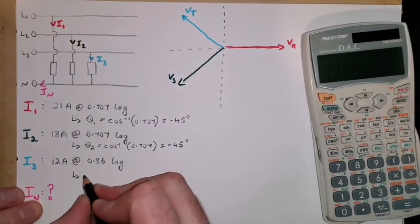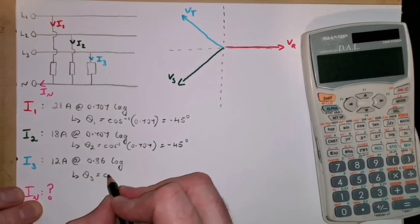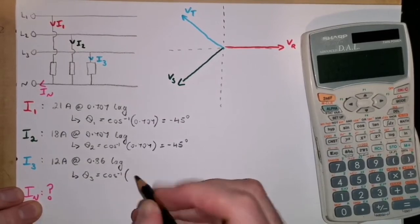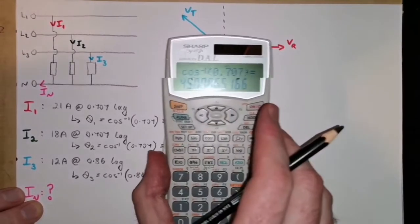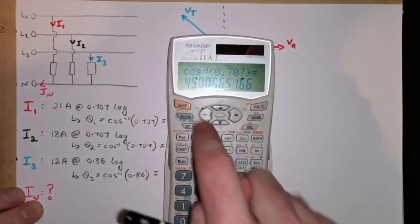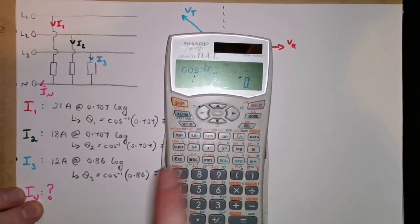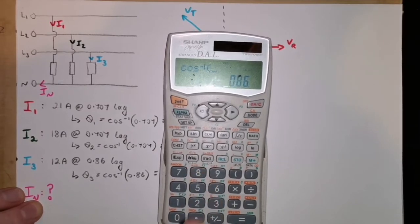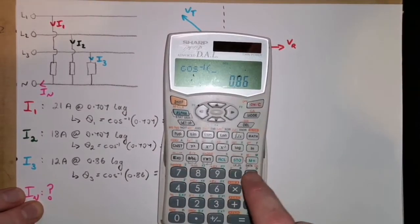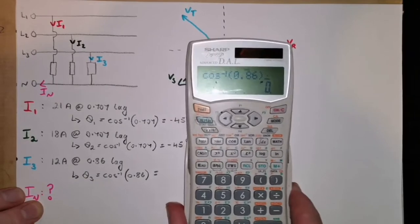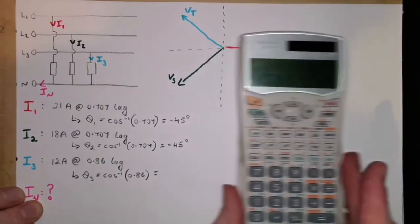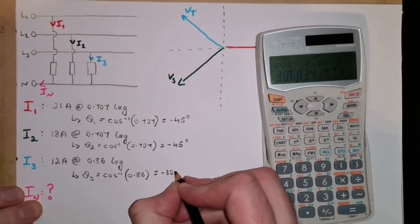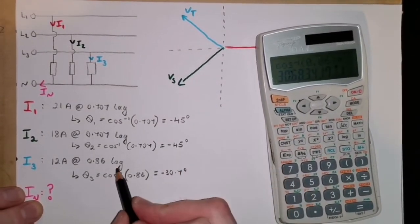And then finally, theta 3, same method, 0.86 is our power factor, and I'll just double-check what the value of that one is. It's the cosine inverse. On my calculator here, it's shift cosine for that, and 0.86. So, this is closer to 1, so our angle should be less than 45. We have 30 point, I'll go with 30.7. And it's minus 30.7 because it's also a lagging power factor.